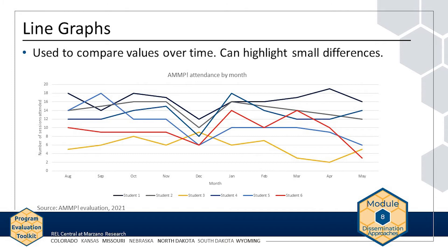A line graph is the best choice for displaying change in a value over time. Multiple lines can be used to display and compare different values. A line graph allows interpretation of small differences between values. This example graph shows student attendance data for AMP, displaying data for six students, each line showing how many AMP sessions a student attended each month. It is easy to see differences in the number of sessions each student attended. But if the graph included 25, 50, or 100 students, a line graph can quickly become cluttered with too many data points, so think carefully about the data you are displaying before choosing a line graph.